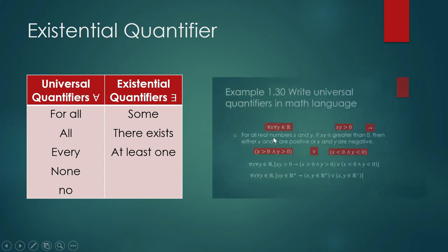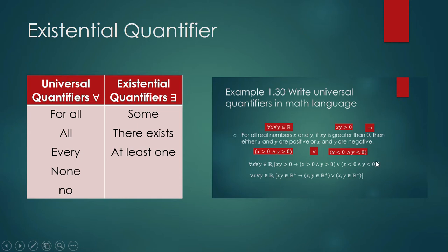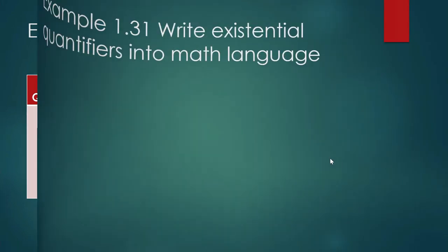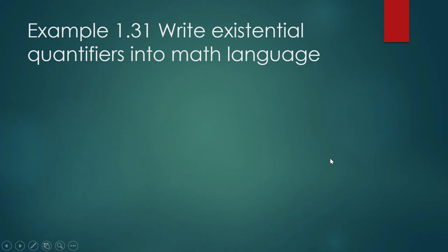Last time we focused mainly on the universal quantifier. We translated English sentences with math content into math sentences using math symbols — symbols for sets, elements, common math symbols, connectives like disjunction and conjunction, and the universal quantifier. We shall continue, but this time we will include existential quantifiers.